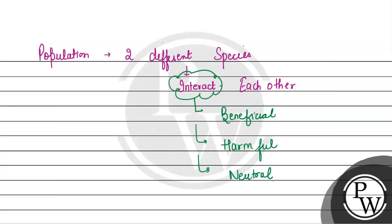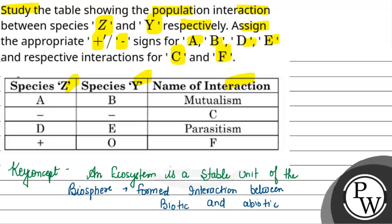Considering the interactions, when beneficial, a plus plus denotes mutualism. What is mutualism? Where both species benefit. If we look at A, it will be positive because it's beneficial. B will be positive.